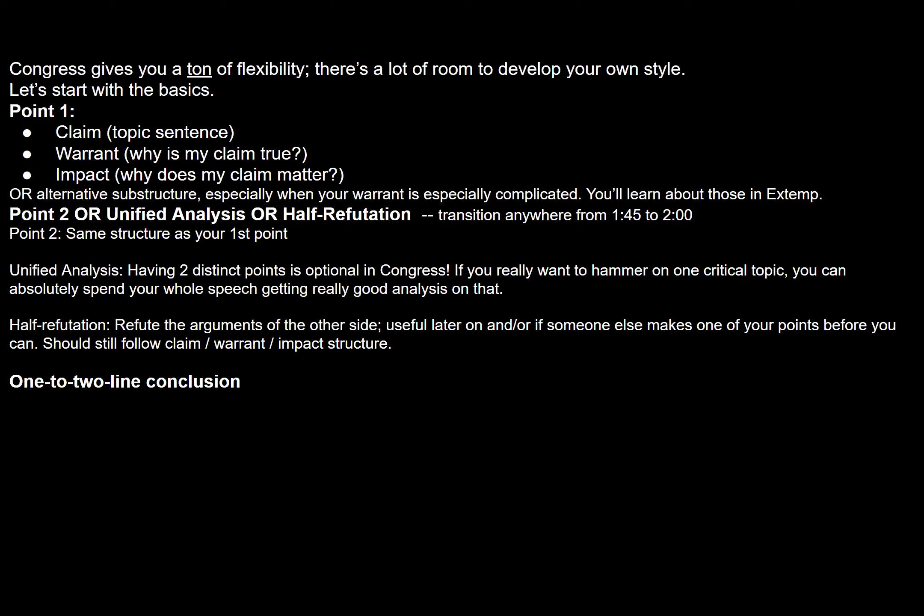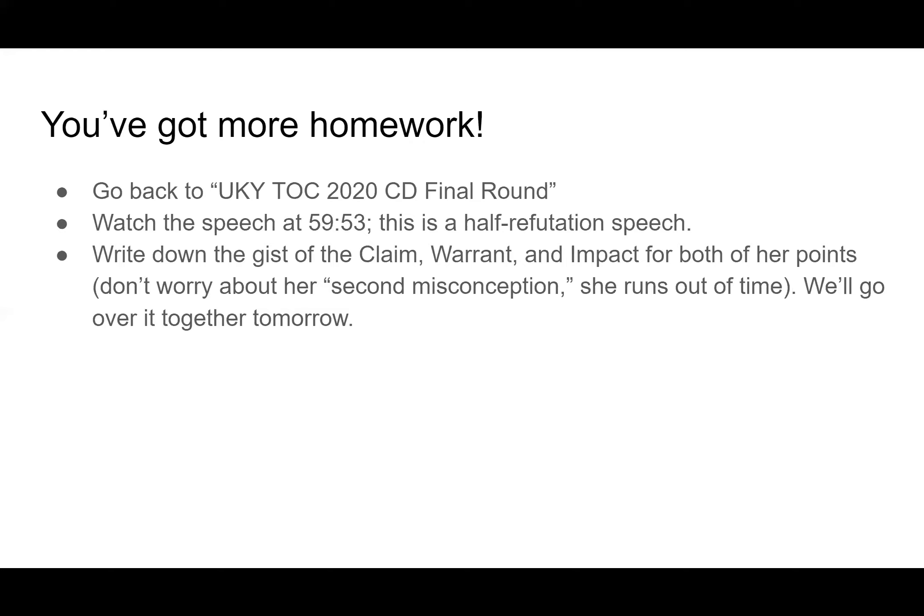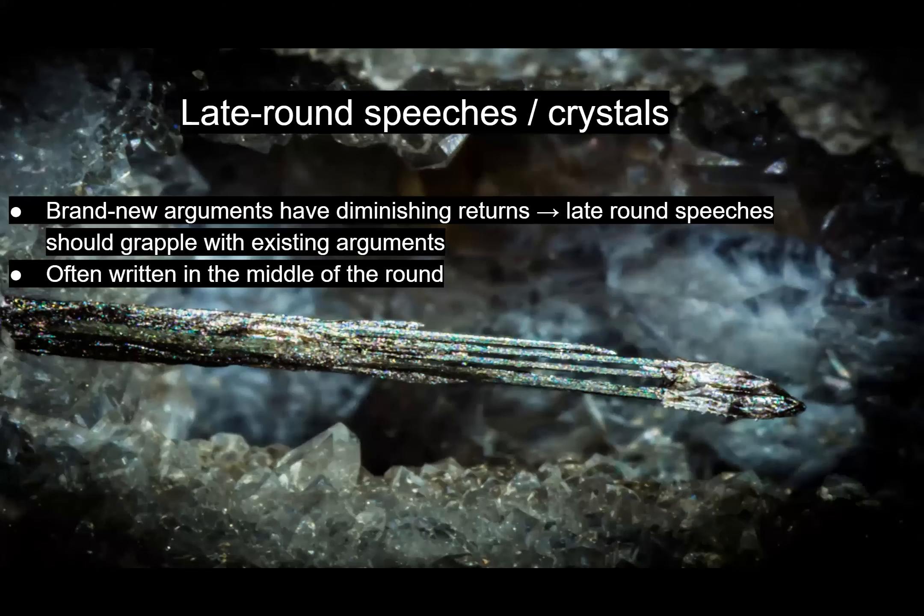The conclusions inside of these speeches are generally one to two lines, and because you have so much less time than Extemp, you're usually running out of time near the end of your speeches. You just want the zinger lines you would normally give at the very end of an Extemp conclusion — something to give an emotionally charged ending to the whole of your speech. I want you to go back to the same video and watch the speech at 59:53. It's a half refutation. Write down the gist of the speech's claim, warrant, and impact for both of her points, and then we'll go over it together.